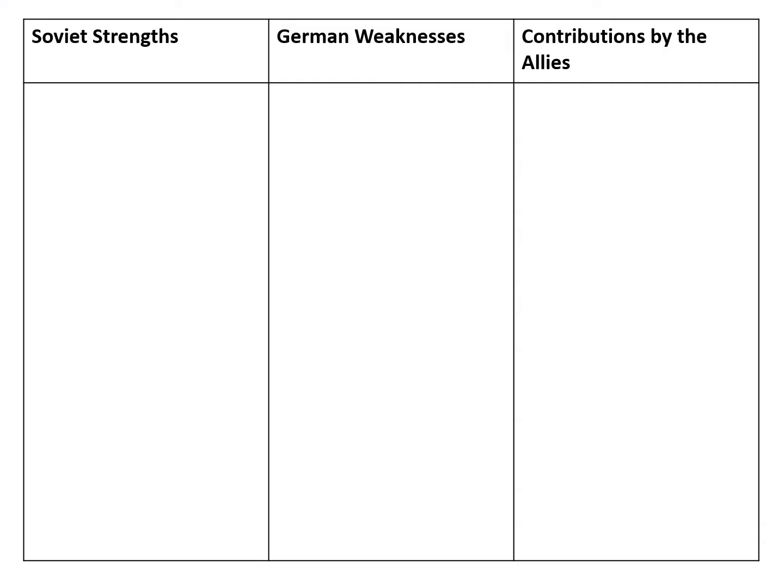You might decide to do it as a table, which would probably be the quickest and easiest way to organise it. After using the next few slides to fill it in, remember to highlight which of the three areas is most significant and then which is most significant overall in Soviet victory over Germany.